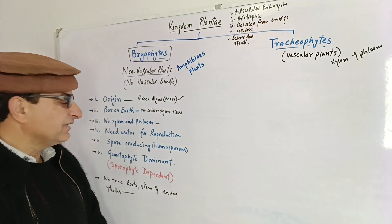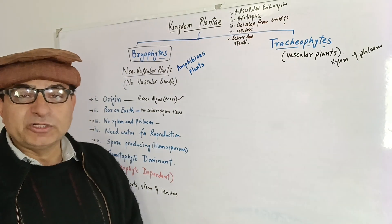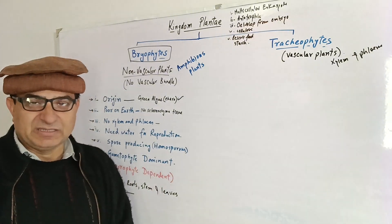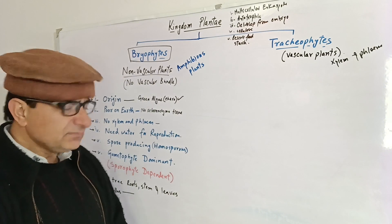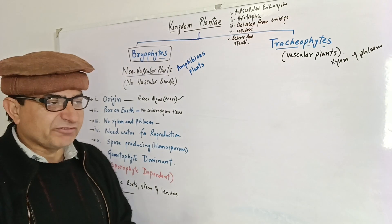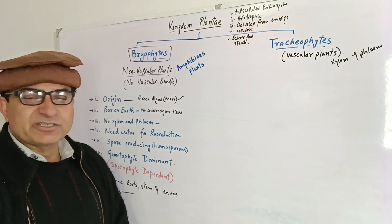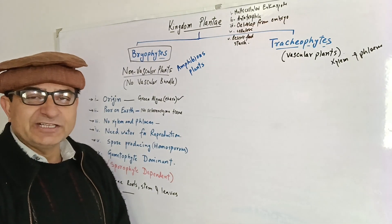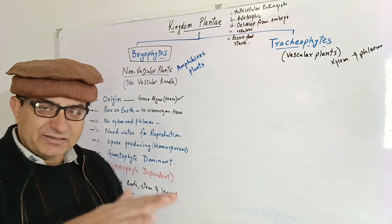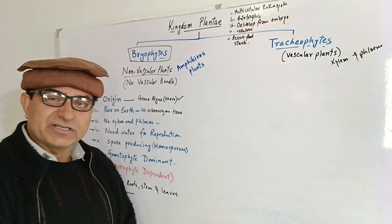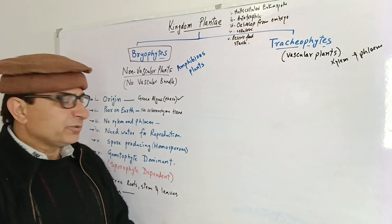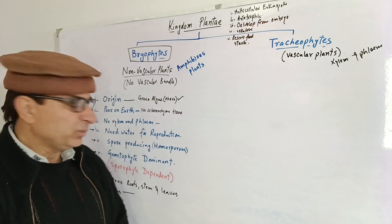Bryophytes are spore-producing plants. These spores help them survive in unfavorable conditions. If there is dryness, unsuitable temperature, or lack of water availability, they start forming spores. Spores will survive the unfavorable conditions and when suitable conditions return, they will germinate to produce a new colony once again.